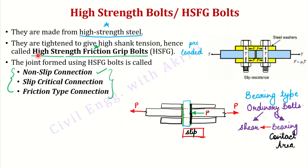On the other hand, high strength friction grip bolts have no such slip occurring to provide resistance. They provide resistance through friction. That is why they are called friction type bolts — just as bearing type connections use bearing, friction type connections use friction.